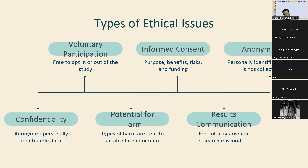The next type is confidentiality — we know who the participants are, but we keep that information hidden from everyone else. We anonymize personally identifiable data so that it can't be linked to other data by anyone else. You know who the participants are, but you remove all identifying information from the report.